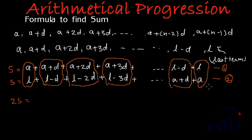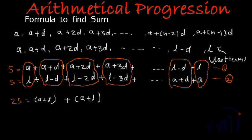Now, a magic is going to happen here. If I add these groups, some of them are going to be the same. The first group gives A plus L. The second group also gives A plus L — the plus D and minus D cancel each other. Similarly, from the third group of terms, we again get A plus L — the plus 2D and minus 2D cancel. And from the fourth group as well, I get A plus L.